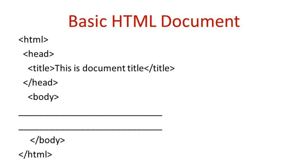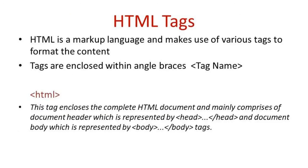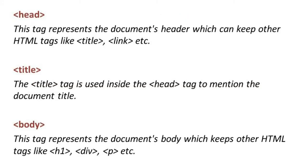Whatever you want to display on the web page is enclosed within the body tag. You can add paragraphs, images, lists, tables, forms — whatever is present inside the body tag will be displayed on the web page. In the end, we close the HTML tag. There are two types of tags: container tags, which require both a starting and ending tag, and empty tags, which do not require an ending tag.